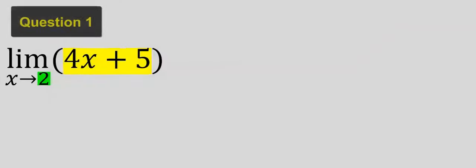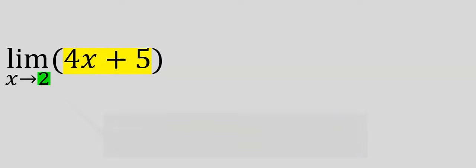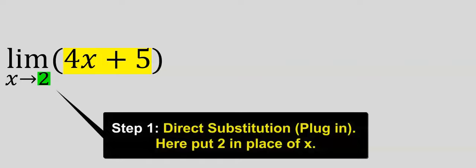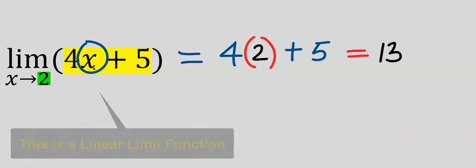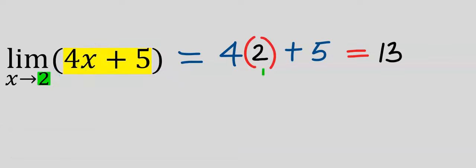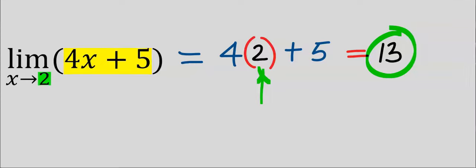To understand this, consider this first question. Let's find the limit of 4x plus 5 as x tends to 2. Step 1: wherever you see x, replace it with 2. Our answer is 13, and because we got an answer directly, we do not need L'Hôpital's rule.